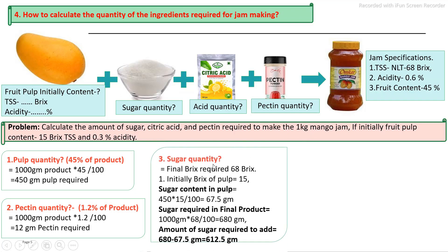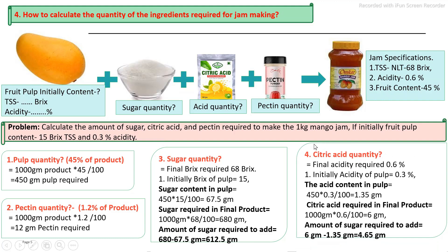Next is the sugar quantity. The initial brix of the pulp must be checked first. In this problem, the initial brix is 15 degrees, so the initial sugar content is calculated from that. Then the final sugar requirement is determined — the final brix required is not less than 68. Subtract the initial sugar content of the fruit from the final requirement to get the amount of sugar to add. Similarly, the acid quantity is calculated: the initial acid is 0.3%, so the initial acid in grams is calculated. The final acid requirement is 0.6%. Subtracting gives 4.65 grams of acid needed to make 1 kg of jam. These calculations are used to standardize the product.